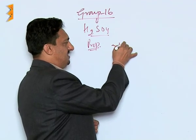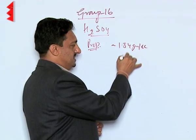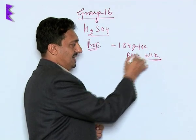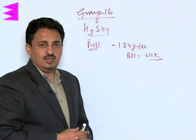Its specific gravity is 1.84 grams per cc and its boiling point is 611 Kelvin. That is very high, it is pretty high because it is having extensive hydrogen bonding.